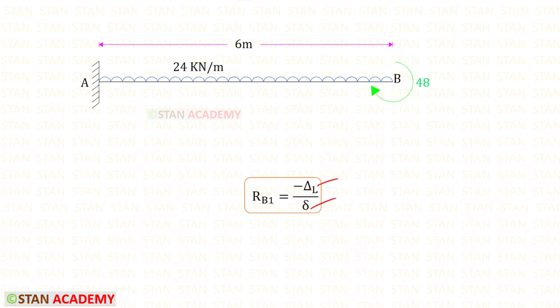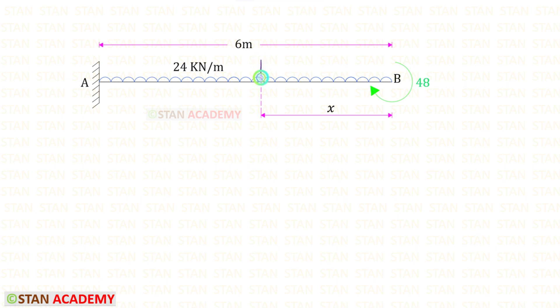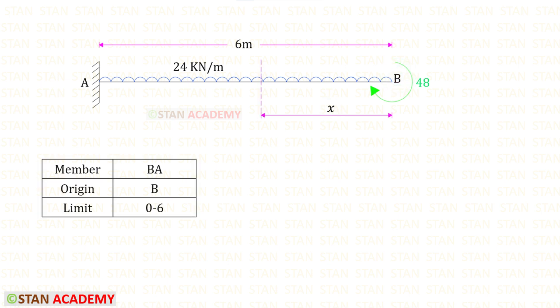In the unit load method we need to make sections. In this beam there is only one part, AB, so we make only one section. I have made a section at a distance x from point B. Now let us make a table. In the table, the member is BA, the origin of the section is point B, and the limit is 0 to 6.